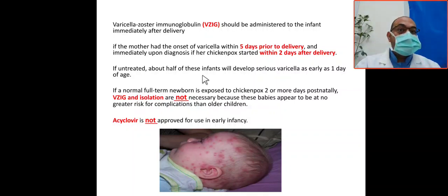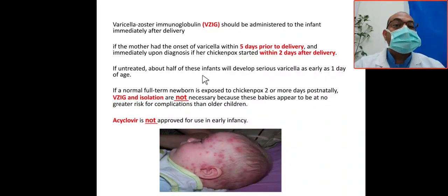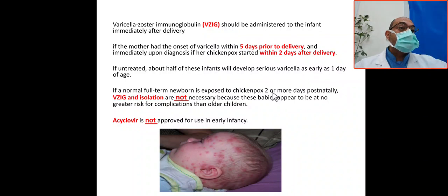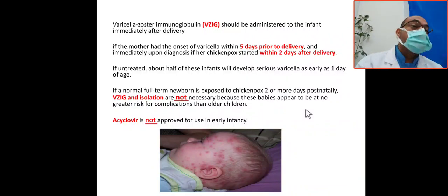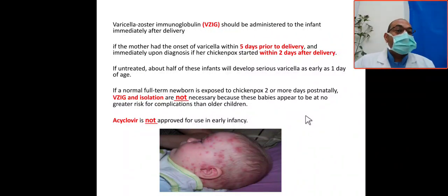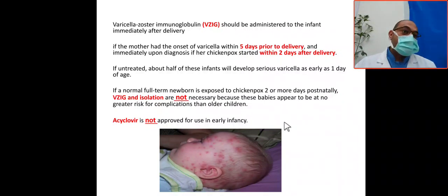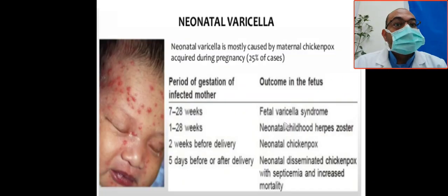Why give varicella zoster immunoglobulin within that window? Because if you leave the infant without treatment, half of these infants will develop serious varicella as early as one day of age. However, this baby is seven days old — more than two days postnatal — so varicella zoster immunoglobulin and isolation are not necessary, as these babies appear to be at no greater risk for complications than older children. Acyclovir can be given but is not approved for use in early infancy due to limited efficacy data.